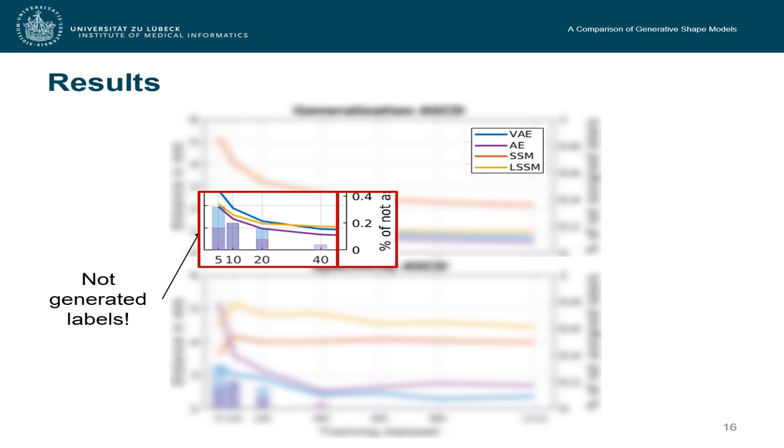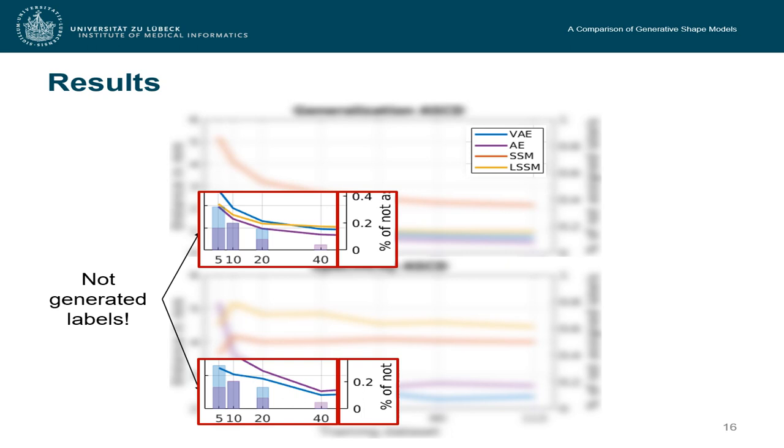And we see that for small training set sizes under 20, this is almost 40%. And this can also be seen for the specificity. However, this doesn't happen when we consider shape models since their nature is to always reproduce all labels.